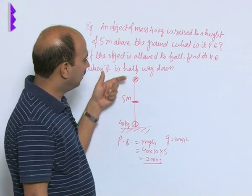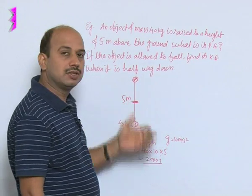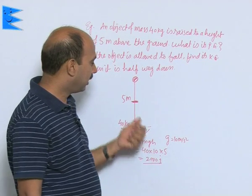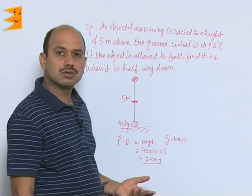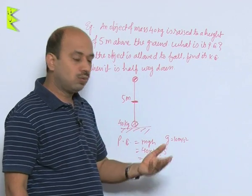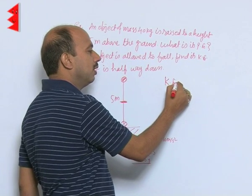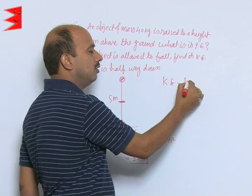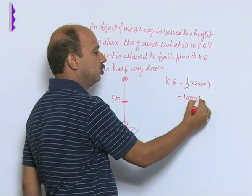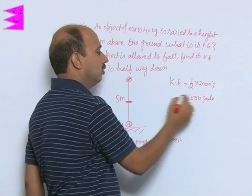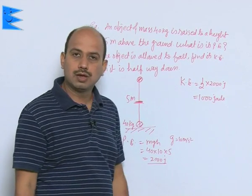This is the potential energy at the highest point. When object falls from here, potential energy changes into kinetic energy and comes to the midpoint. What happen? Half of the potential energy has lost. It means that has converted into kinetic energy. Obviously, kinetic energy at midpoint will be half of the potential energy, that is 2000 joule, that is equal to 1000 joule. At this point kinetic energy will be 1000 joule.